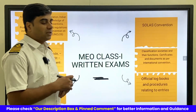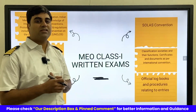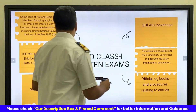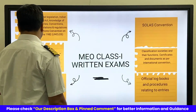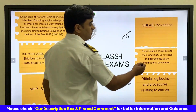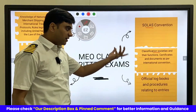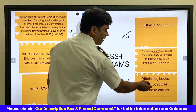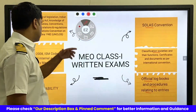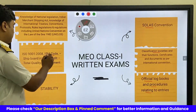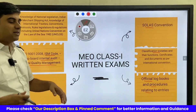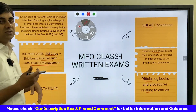Let's discuss the different courses we have to study for MEO Class 1. We have to study the SOLAS convention, classification societies and their functioning, the official logbook and procedures relating to entries, the ISM code, shipboard internal audit, and total quality management. These are all the different topics we have to study.